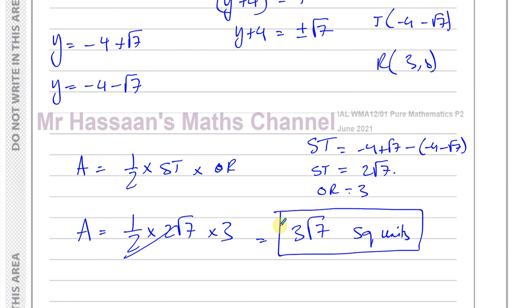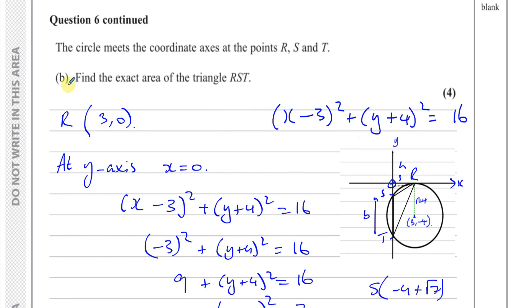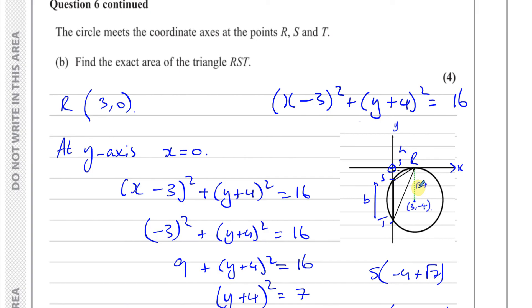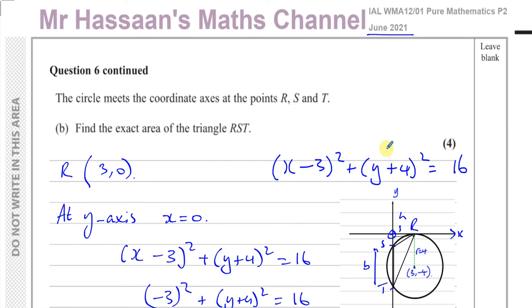So there is the answer to question 6 part B: the exact area is 3√7 square units. They asked for the exact area, so we leave it in terms of the square root. Other questions from this June 2021 P2 paper can be found by clicking on the link at the end of the video. Questions related to equations of circles from P2 are also linked. You can subscribe to my channel, and in the video description you'll find links to the index for my P1, P2, P3, P4, M1, and S1 papers, as well as IGCSE questions. Thank you for watching and see you soon.